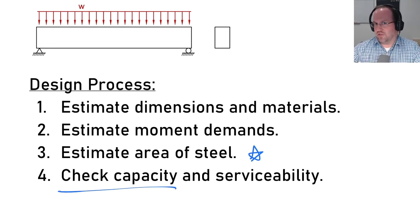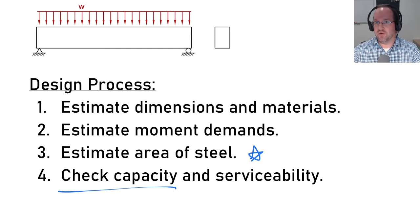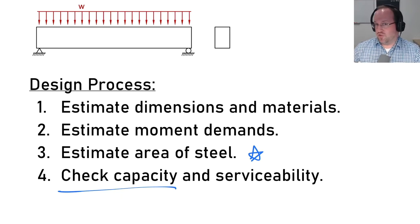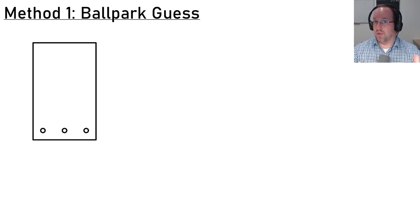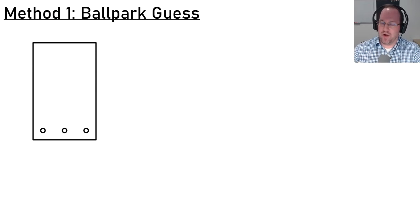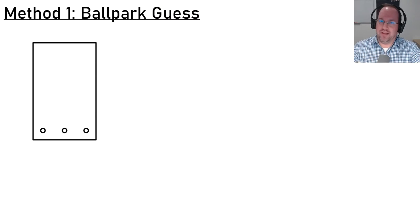In a design situation you would also check your serviceability to make sure that you meet your deflection limits — we'll put that off for a future video. Now there are two methods we can use to estimate the area of steel needed for this beam. The first method is what I call the ballpark guess, which will get a number somewhere in the right ballpark but it's not going to be exact — it's somewhere to start.